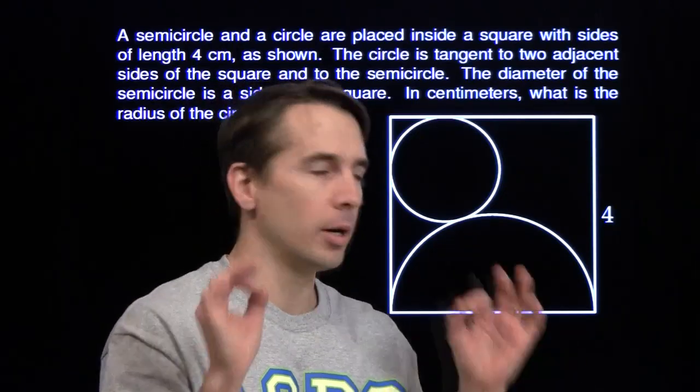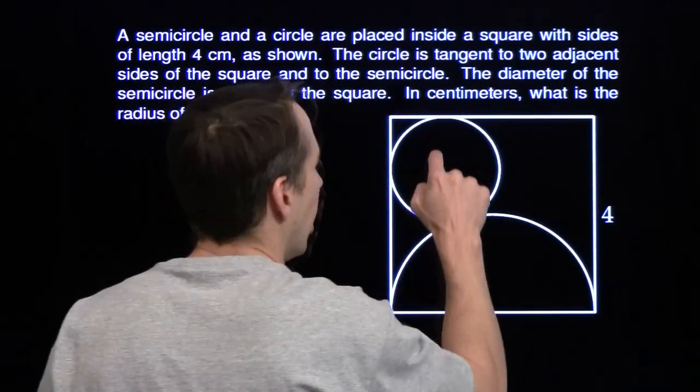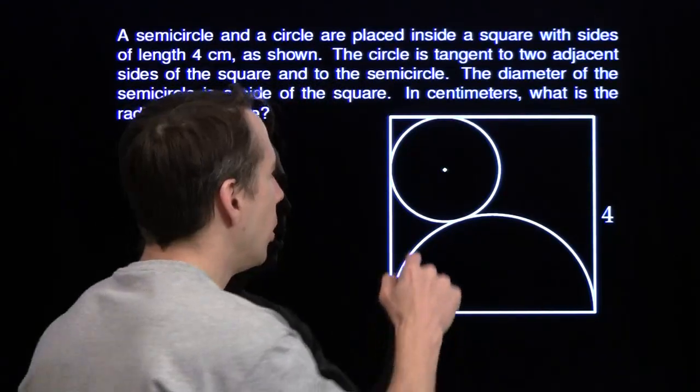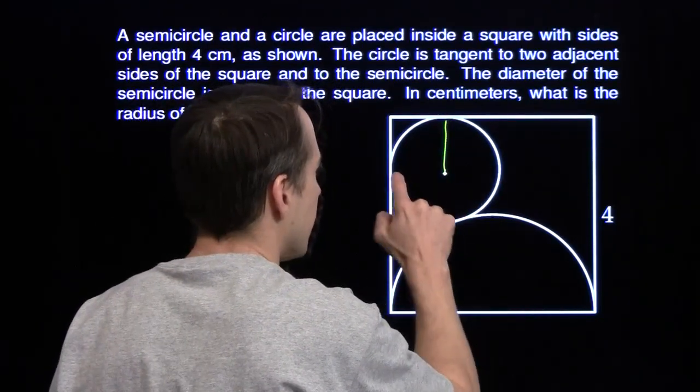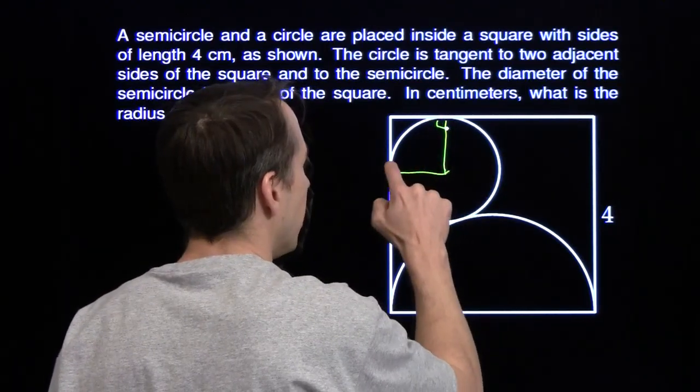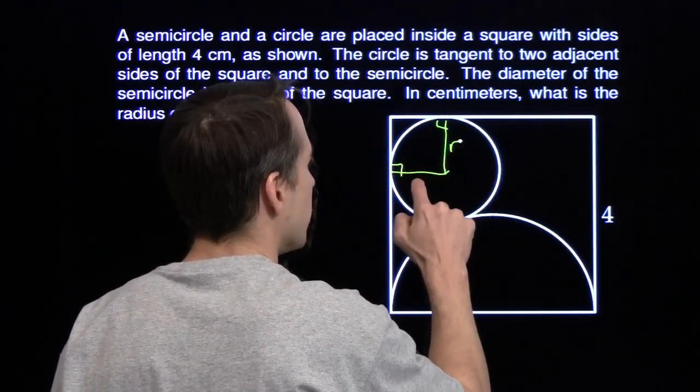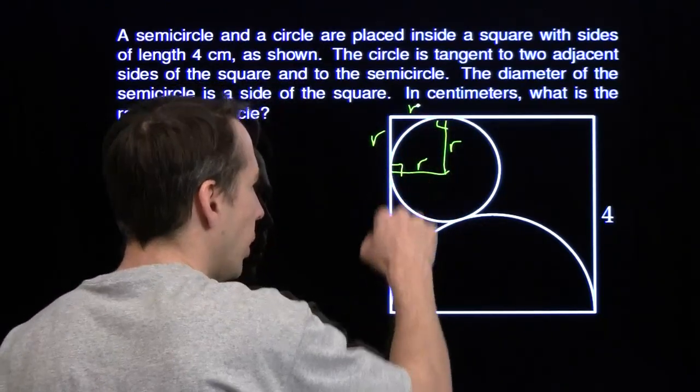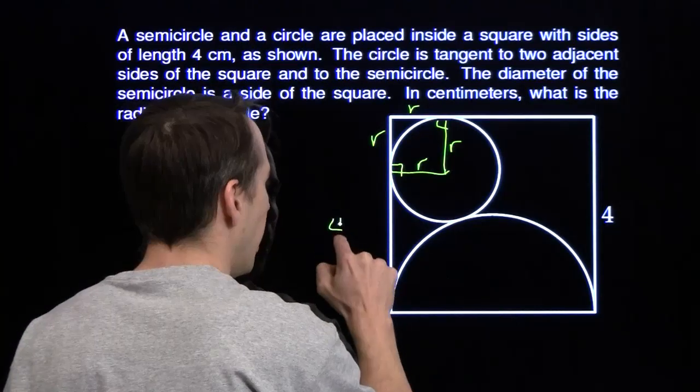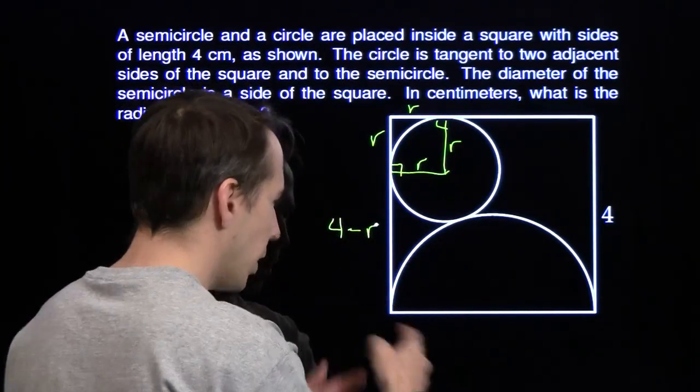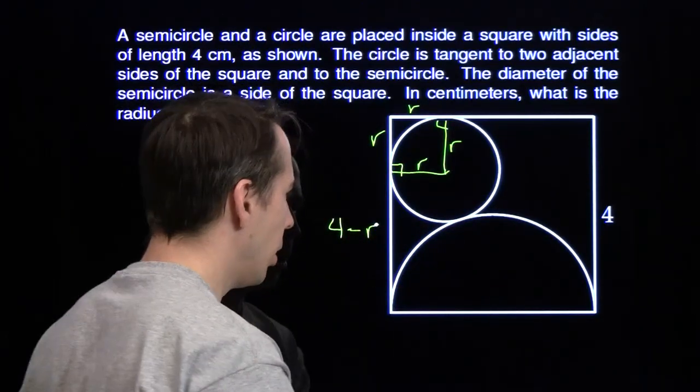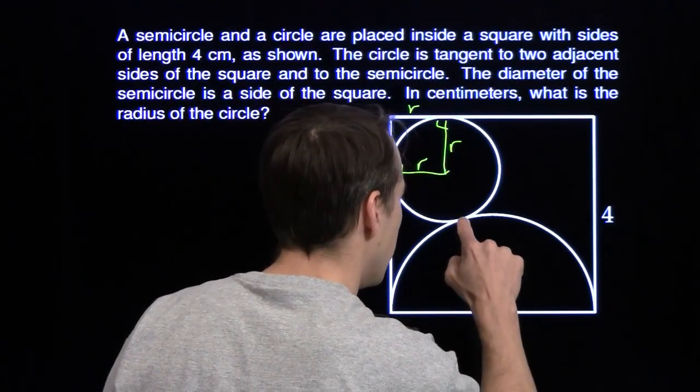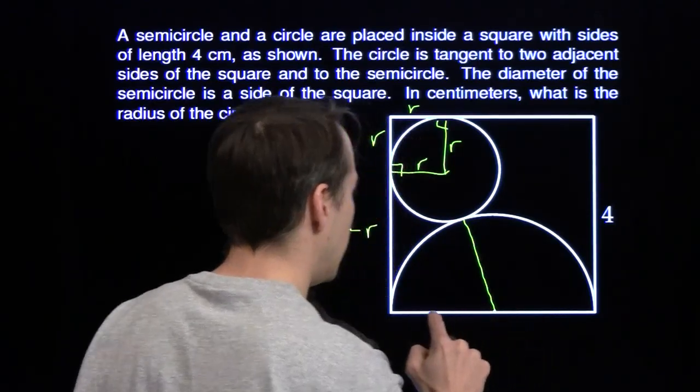We'll start off, we've got to add to our diagram. We'll go ahead and add some radii because that's what we're looking for. And once again, we form a little square up here. So this is the R that we're looking for. This is R, this is R, this is R. This whole length here, that'll be 4 minus R. And we're going to have to use this semicircle somehow. Its diameter is 4, so its radius is 2.